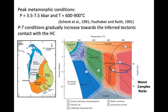The Wanni Complex is mainly composed of meta-igneous rocks. The pressure-temperature conditions range from about 3.5 to 7.5 kilobars and 600 to 900°C — broader than the Highland Complex which was 700–900°C. This range includes upper amphibolite facies conditions as well. Towards the tectonic boundary with the Highland Complex, the metamorphic grade increases.